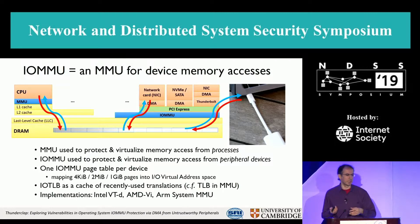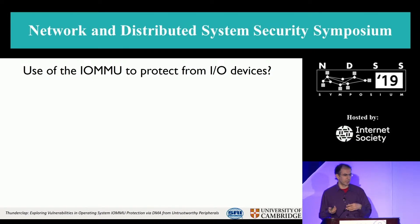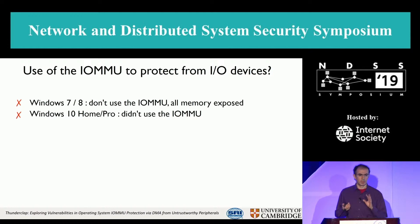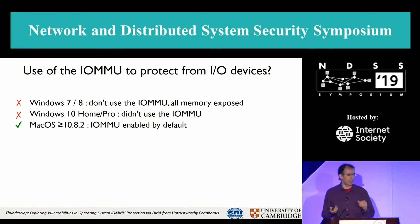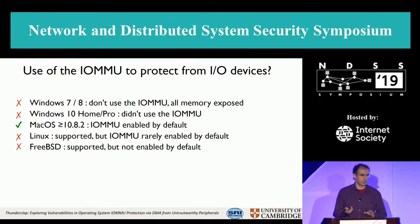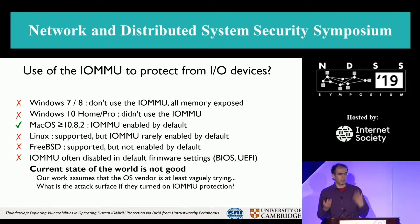There are a bunch of implementations with minor differences. Windows 7, Windows 8, Windows 10 Home and Pro didn't use the IOMMU at all to protect from devices — all memory was exposed to peripheral devices. MacOS, since 2012, enables the IOMMU for protection. Linux and FreeBSD support using the IOMMU, but it's not turned on by default. Often the IOMMU is not turned on by default in BIOS either.